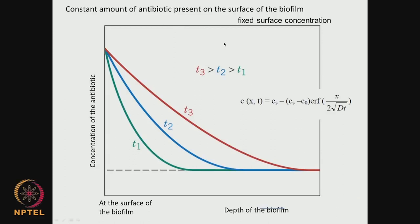Diffusion plays a very important role at the surface of the biofilm. At the external surface you may have a certain concentration of antibiotic, but as it diffuses inside — based on Fick's first and second law — the concentration could drop dramatically, falling to practically zero at the bottom. If you have a fixed surface concentration of antibiotic, then as a function of time the concentration profile inside the biofilm gradually increases: T3 > T2 > T1.